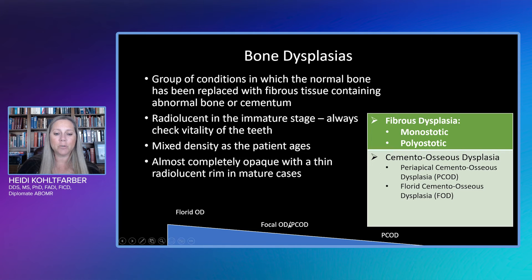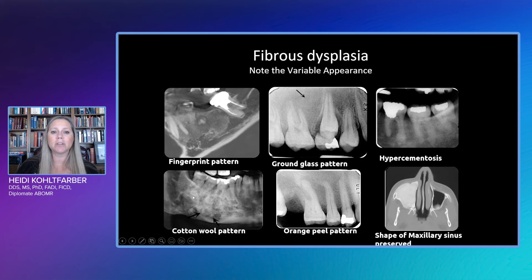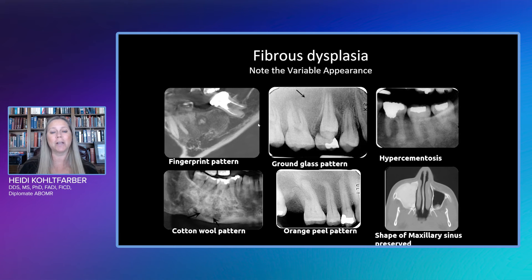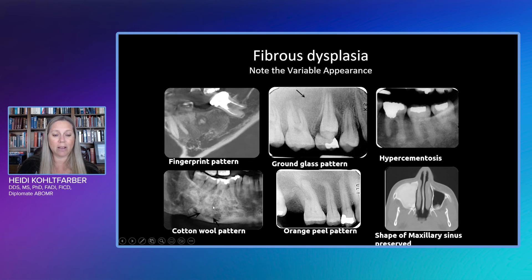If you see a lesion at the apex of one particular tooth, we used to call it focal osseous dysplasia, but now it's okay to call it periapical cementoosseous dysplasia as well, if it's just in one quadrant or just in the anterior regions. Our fibrous dysplasia can be an entire lecture in and of itself, but just note that fibrous dysplasia is a little bit more extensive — one bone or multiple bones — and it can have several different patterns from a fingerprint pattern to the ground glass pattern. We can see hypercementosis of the teeth, an orange peel pattern, and a cotton wool pattern.